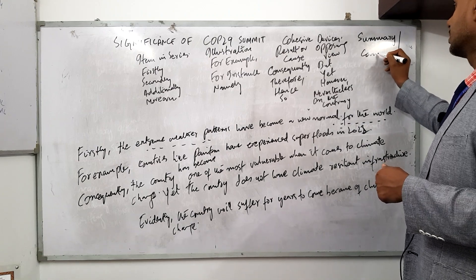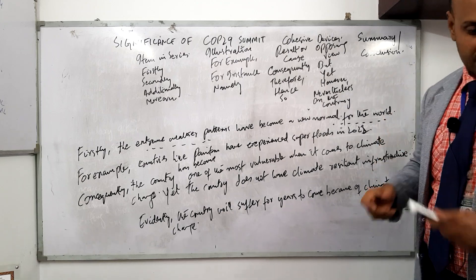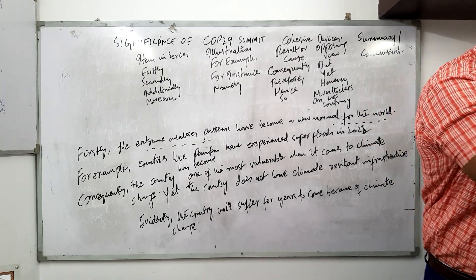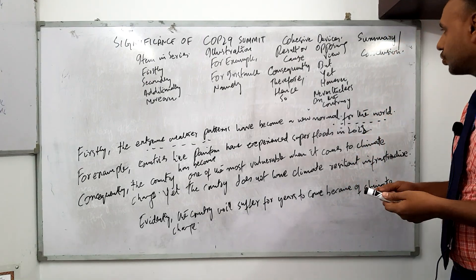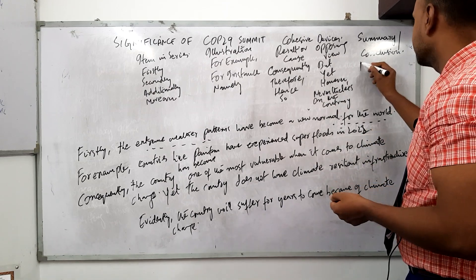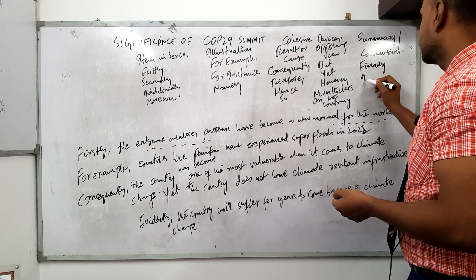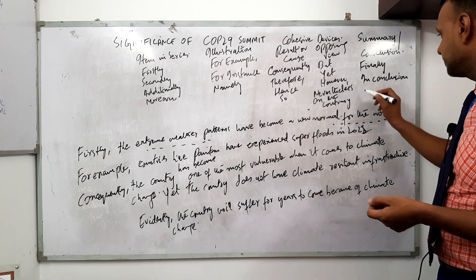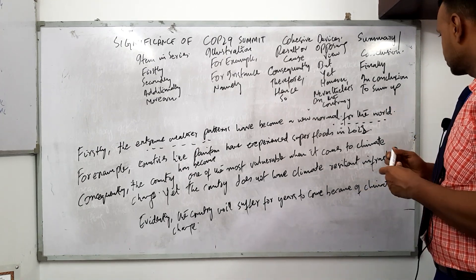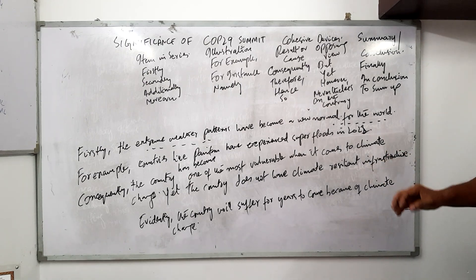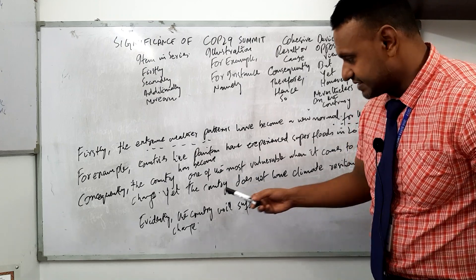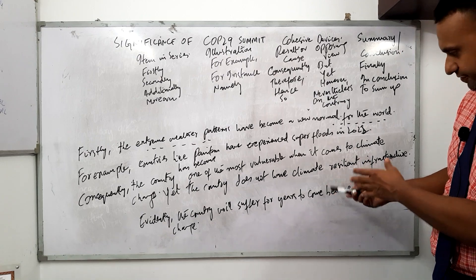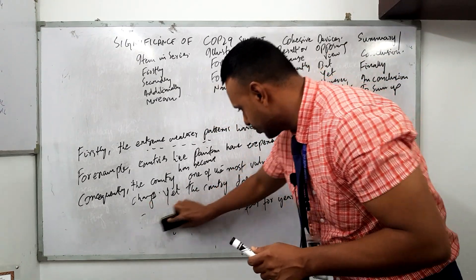The fifth cohesive device is summary or conclusion, using words like: finally, in conclusion, to sum up, and also 'evidently.' I have already used 'evidently' in the concluding sentence of the paragraph: 'Evidently, the country will suffer for years to come because of climate change.' That completes the application of all five cohesive devices in the paragraph.